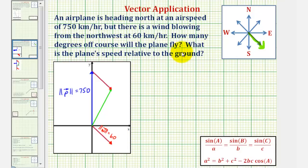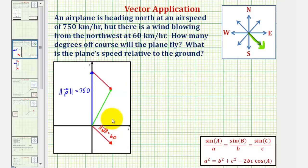Now to answer the two questions, we want to find the sum of these two vectors, or the resultant vector. To add vector p and w geometrically, we'd place the initial point of vector w at the terminal point of vector p, as we see here in red. So this red vector here is still vector w, so it has a magnitude of 60.